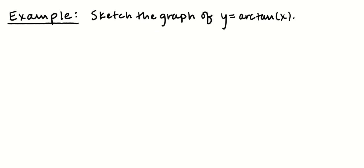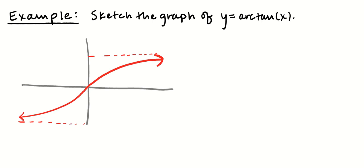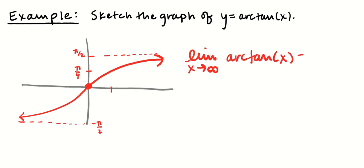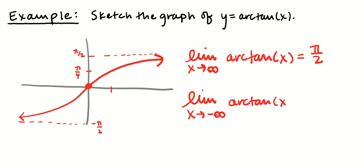Next, we sketch the graph of y equals arctan x. I'm going to draw a picture of it. The important points are that it goes through the origin because tangent of 0 is 0, and arctan of 1 is π over 4. There are horizontal asymptotes on the graph of y equals arctan of x at π over 2 and negative π over 2. The limit as x approaches infinity of arctan of x is equal to π over 2, and the limit as x approaches negative infinity of arctan of x is equal to negative π over 2.